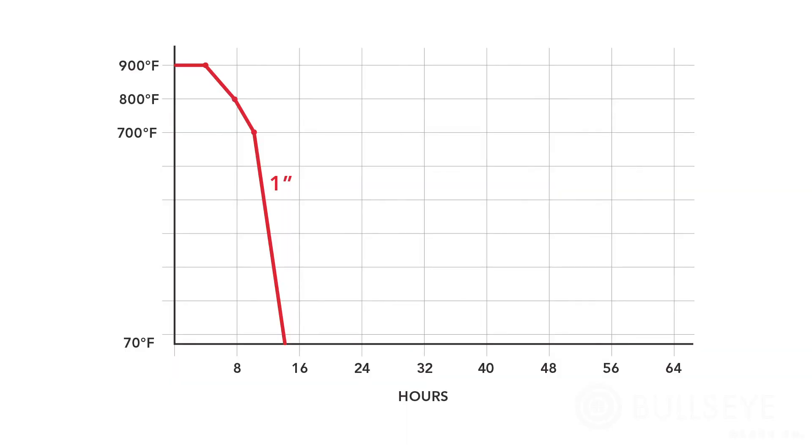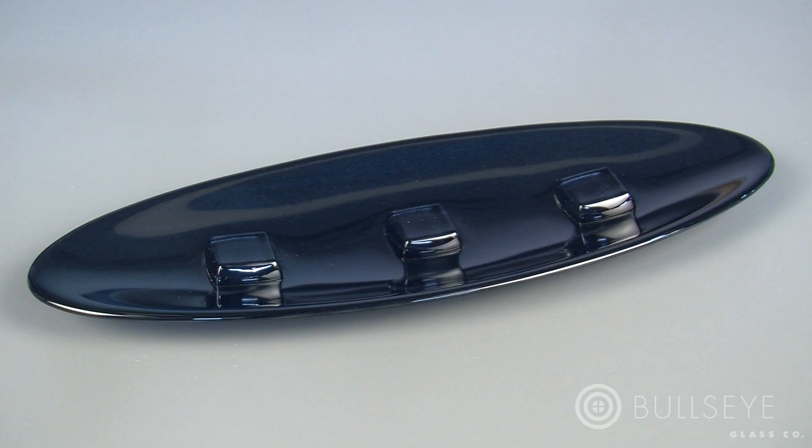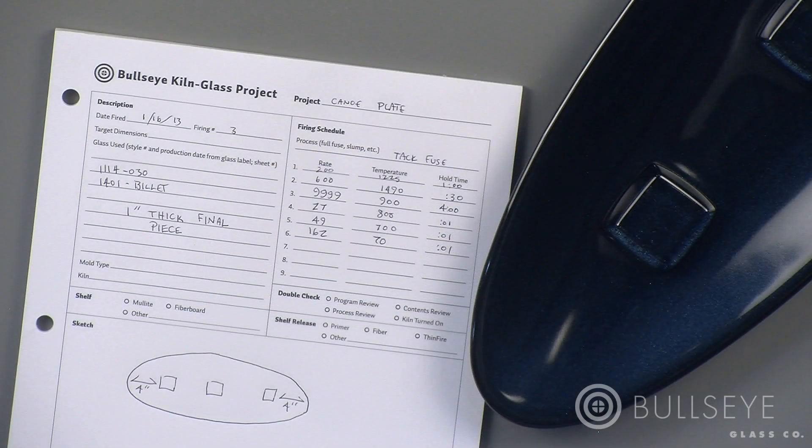Because glass is an excellent insulator, cooling rates get longer as pieces get thicker. Pieces with varying thicknesses tend to cool unevenly. To compensate for this, calculate how thick the finished piece will be in its thickest area.